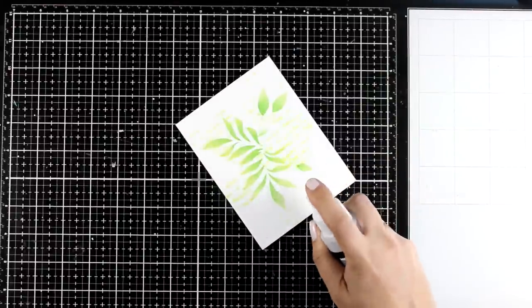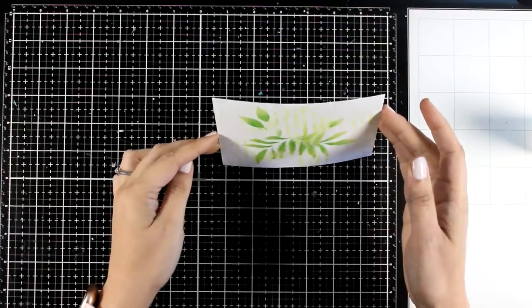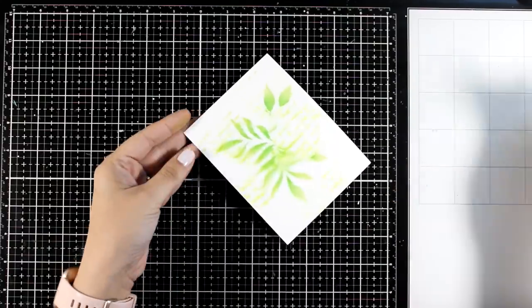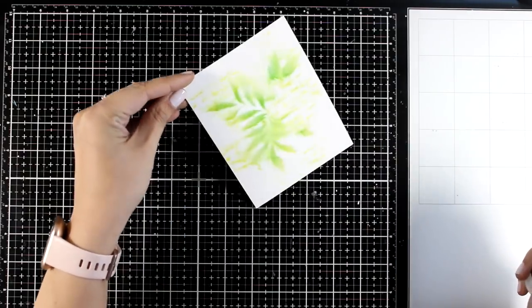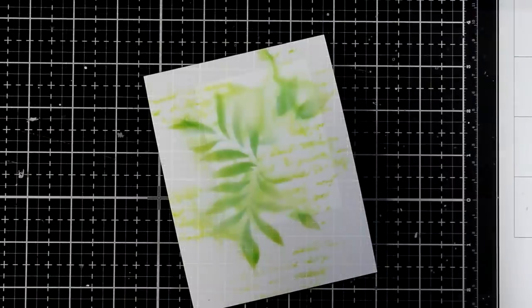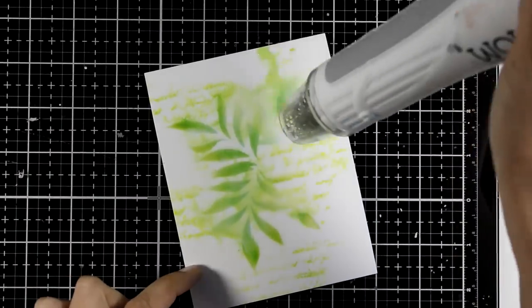And then grab your water and spray over the top. This is going to move the ink. You can even lift the paper and help the ink move any direction that you like. Just because this is watercolor paper, it's going to take water nicely and it actually helps the ink to move around.